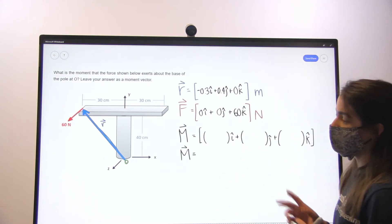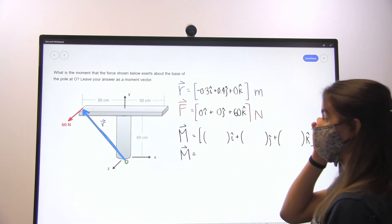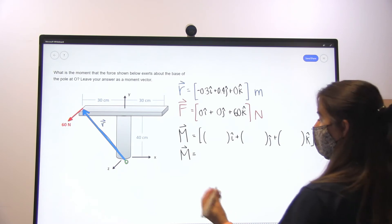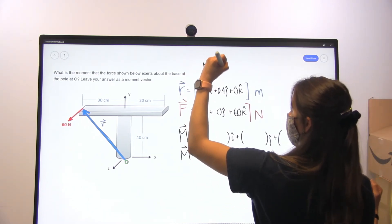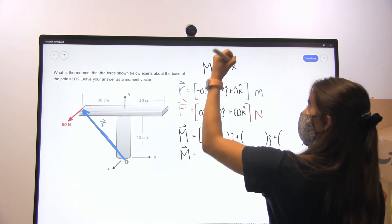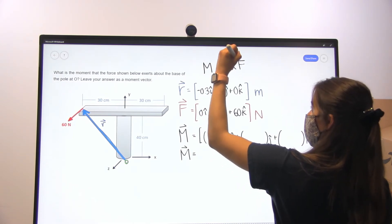Now, in order to find our moment, we want to perform our cross product, because we know that our moment is defined as the cross product between our r vector and our force vector.